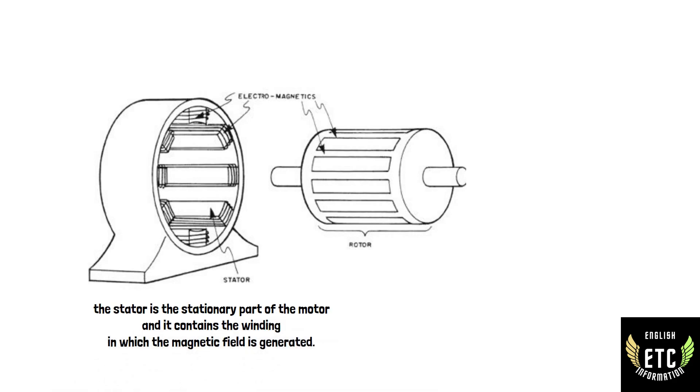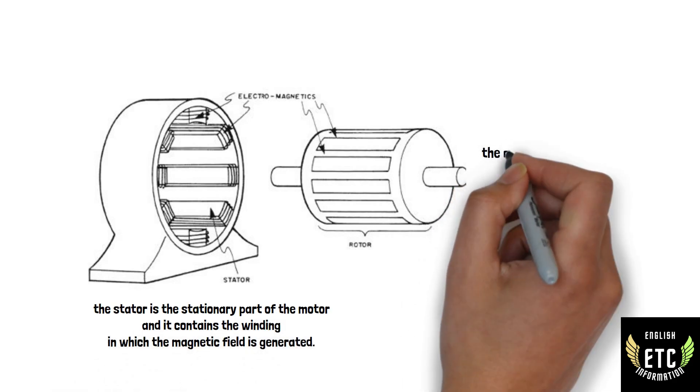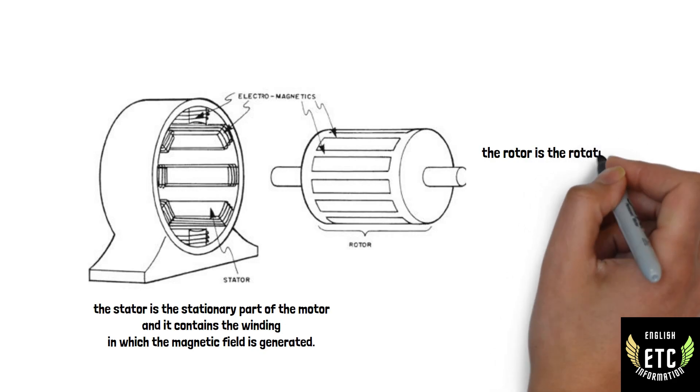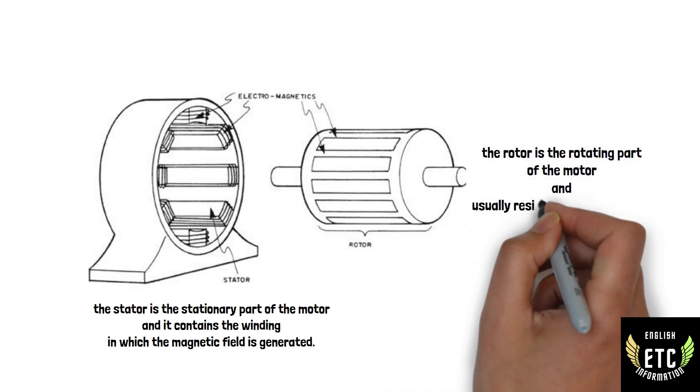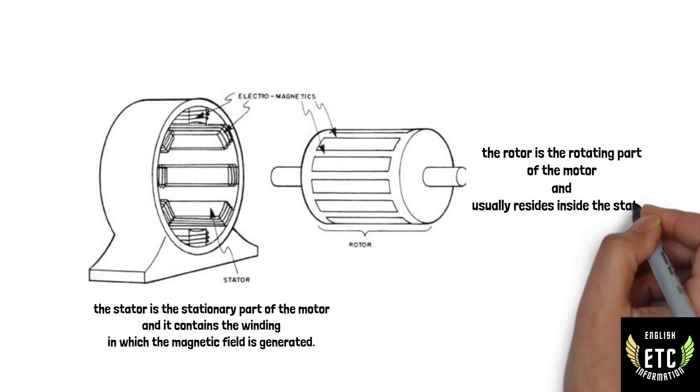And the rotor is the rotating part of the motor and usually resides inside the stator. It consists of conductive bars and coils which interact with the magnetic field to generate mechanical motion.